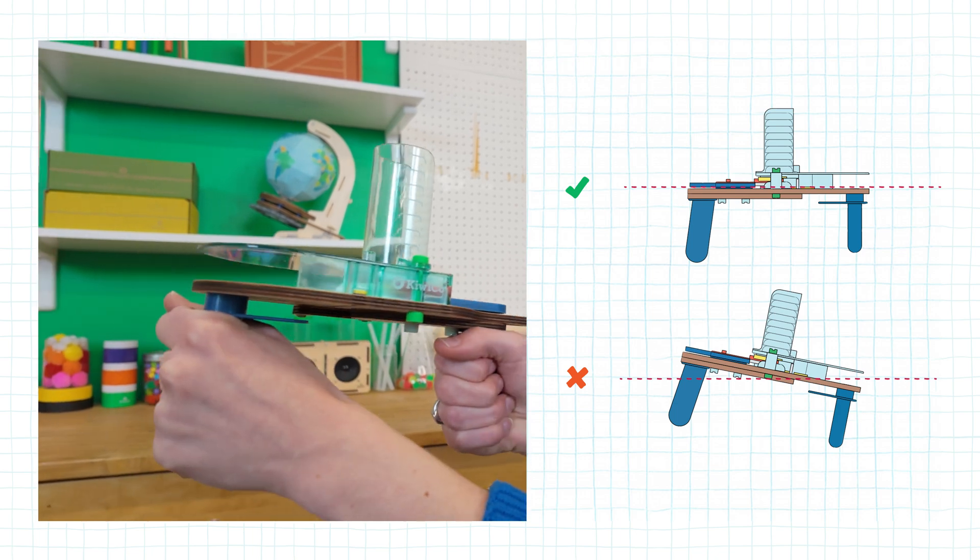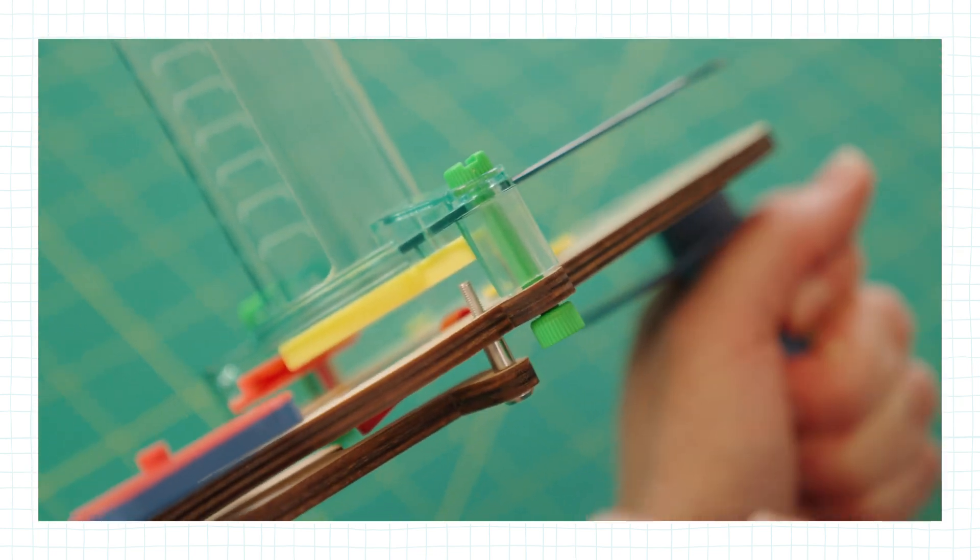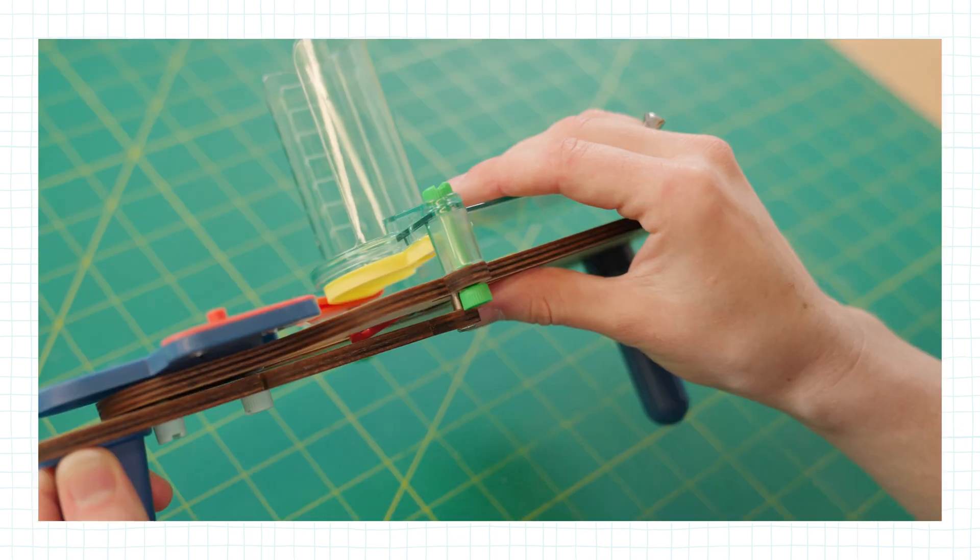Also double check that this screw is not in front of the yellow piece. So if you look from the side and you see a big gap like this, that's no good. All of that needs to be squished together and flat.